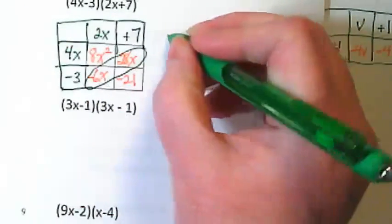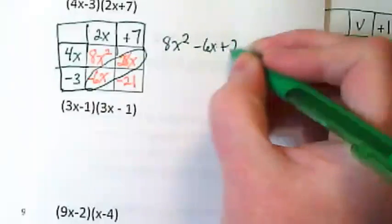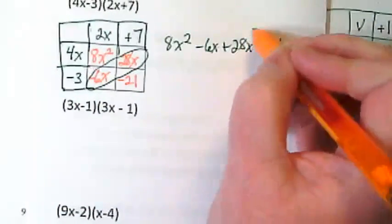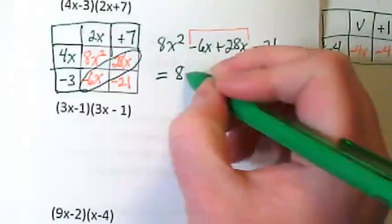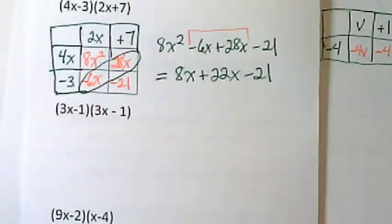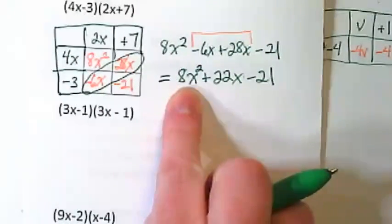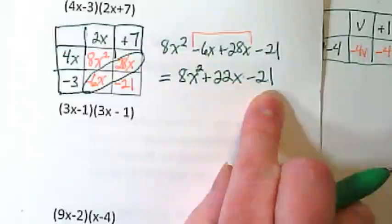So I'm going to rewrite this as 8x squared minus 6x plus 28x minus 21. These two are like terms, so I'm going to combine them. And my final answer is 8x squared plus 22x minus 21. Step 5 is to make sure it is in standard form, and remember standard form has the highest exponent here, which I didn't even write it down. I missed the squared part. 8x squared because that x squared goes first, x goes second, and this has no variable so it goes at the end.